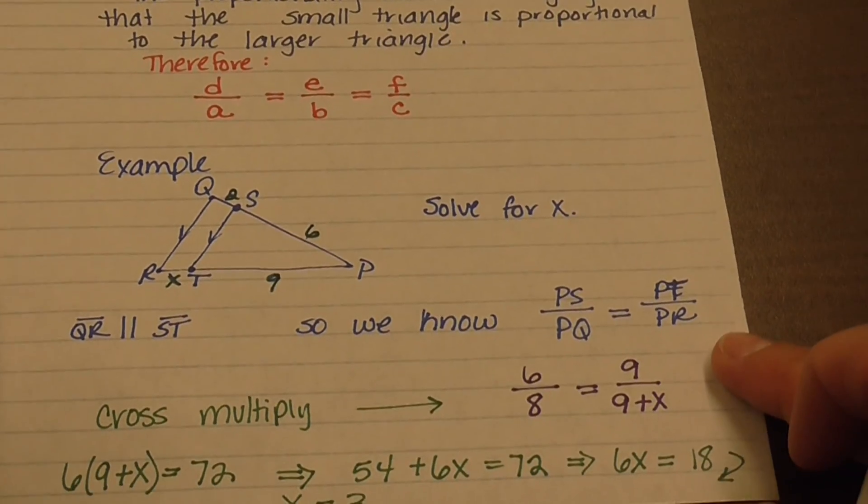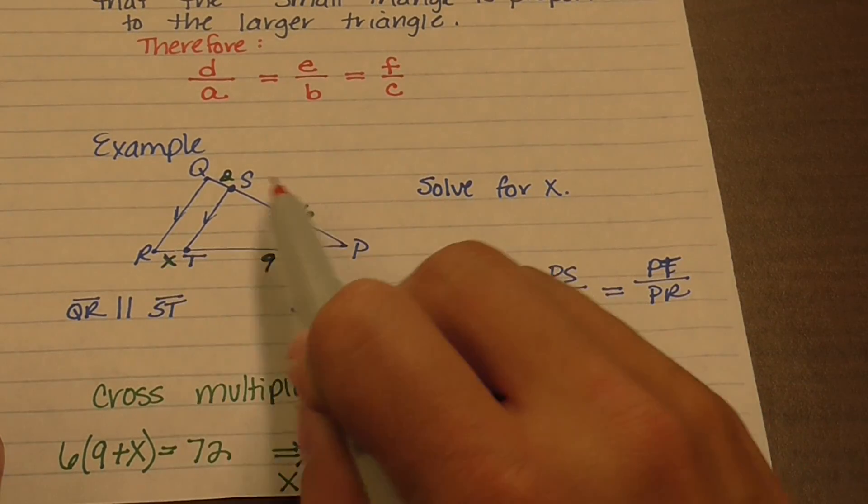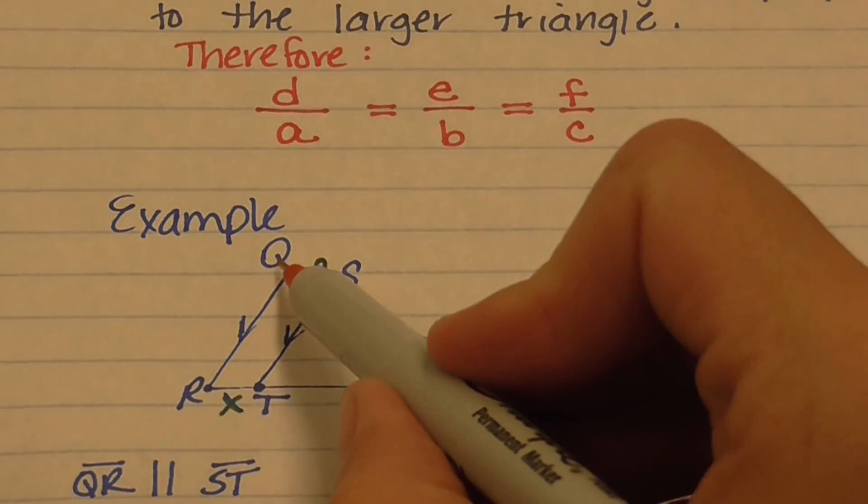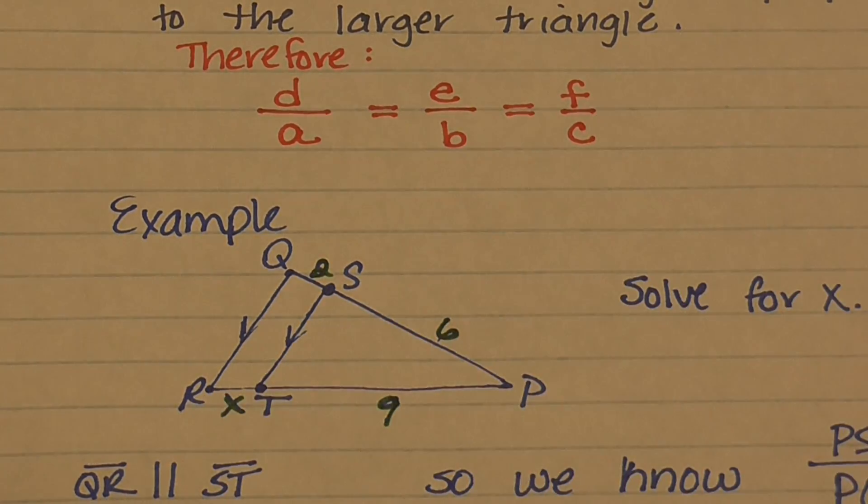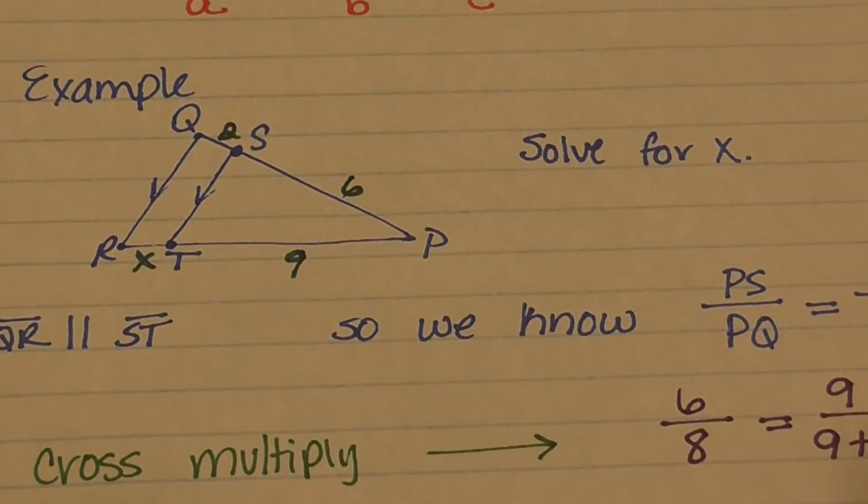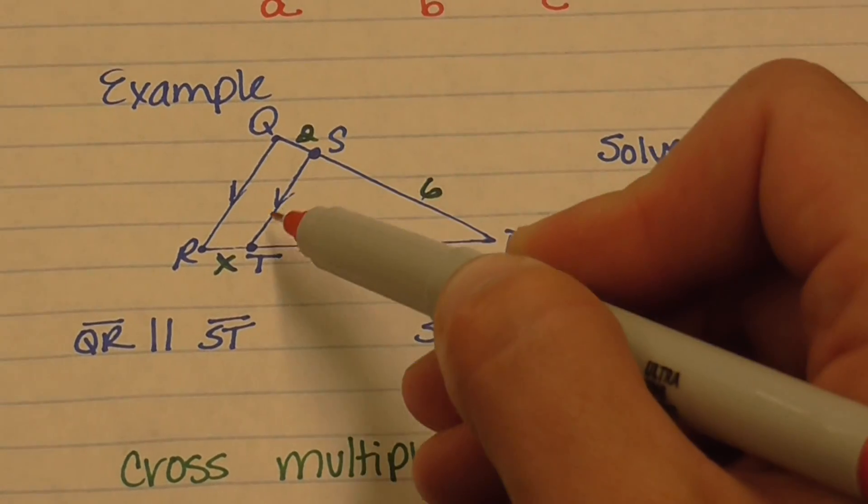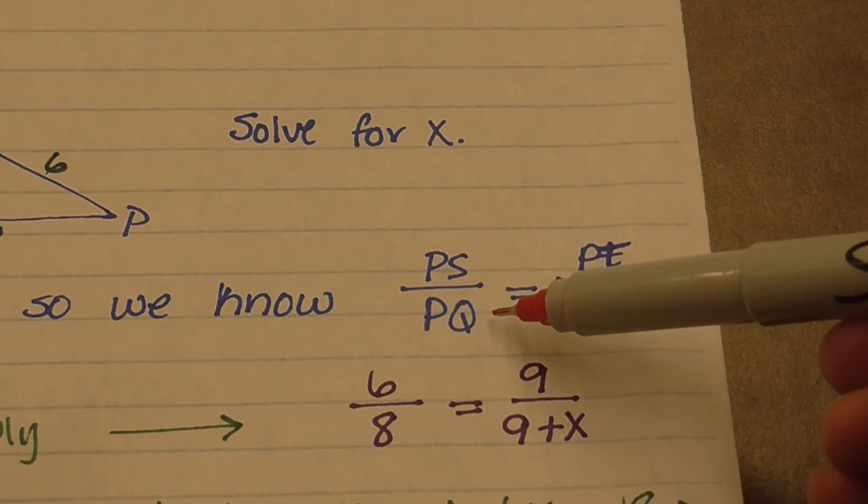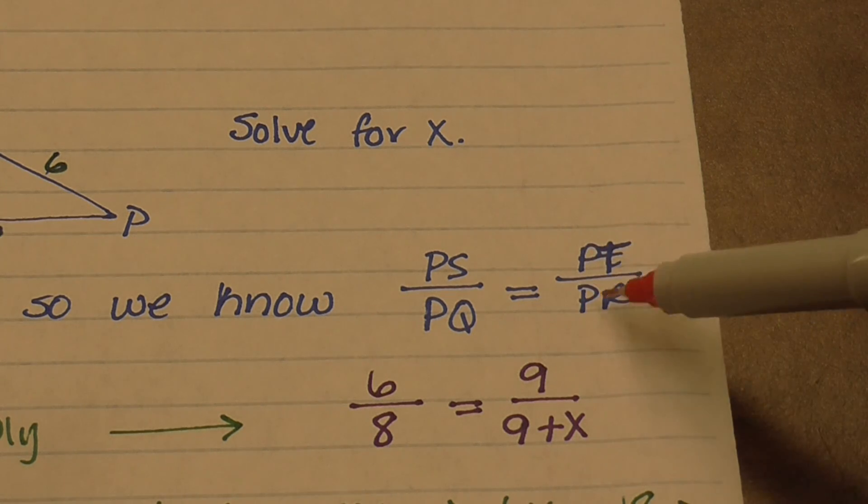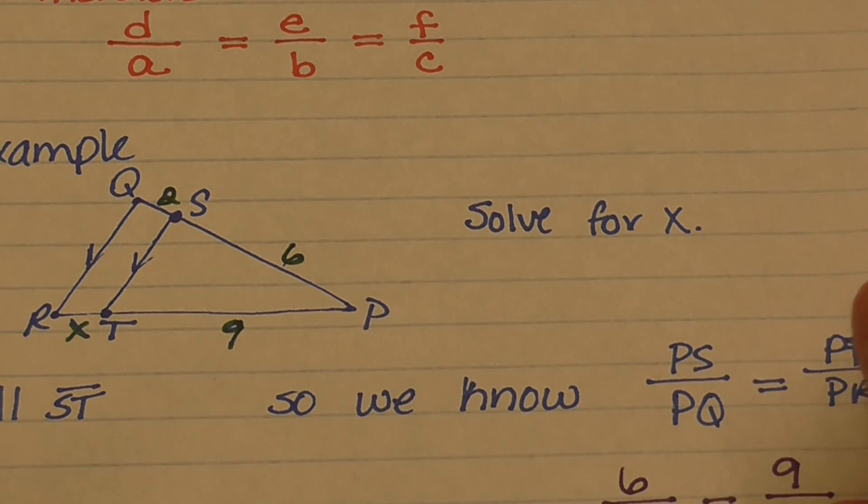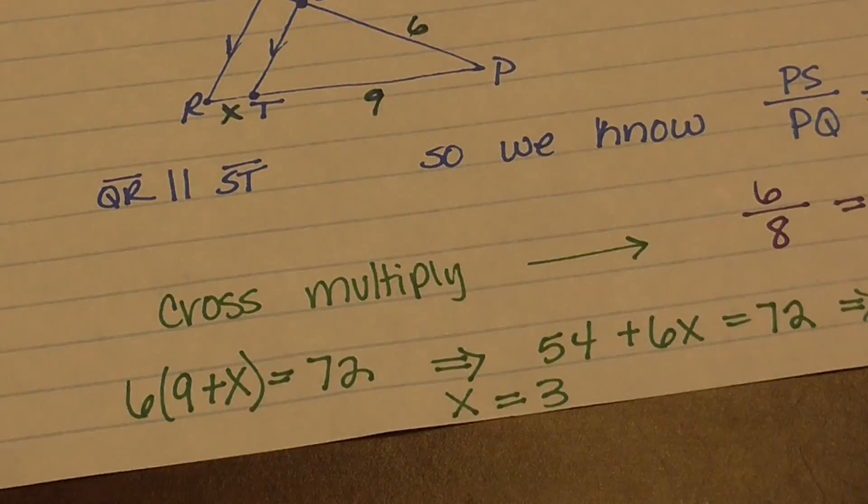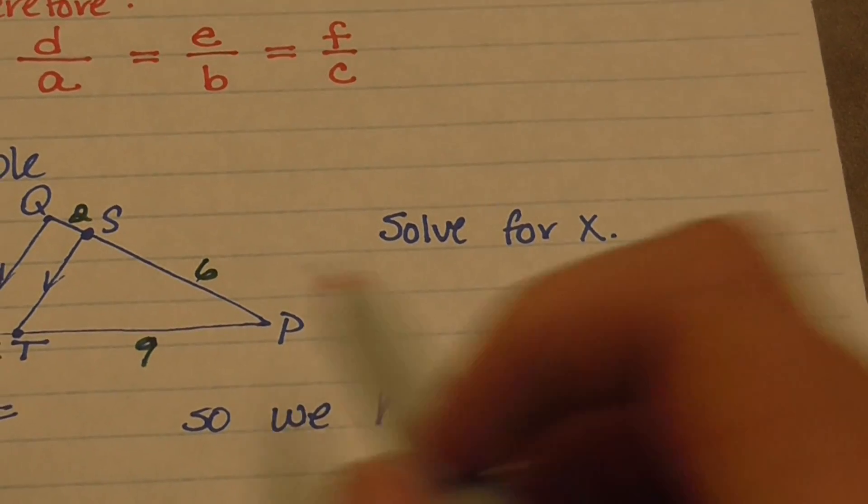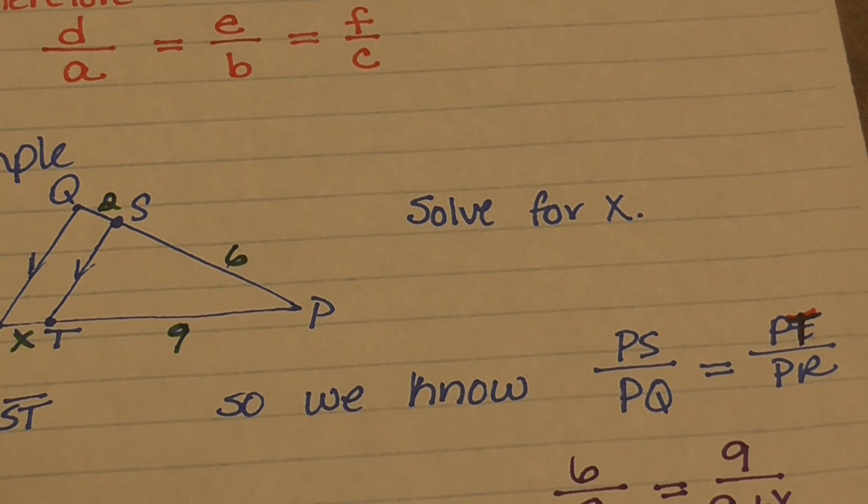An example would look something like this. Given this triangle here, where this has a length of 2, this is 6, this has a length of 9, and this is X, it wants us to figure out what X equals. We already know that QR is parallel to ST. So we know that PS as a ratio to PQ is the same as PT as a ratio to PR. When we set up the ratio, we're going to set up 6 over 8, because it's 6 over the total length which is 8, equals 9 over the total length, which is going to be 9 plus X.